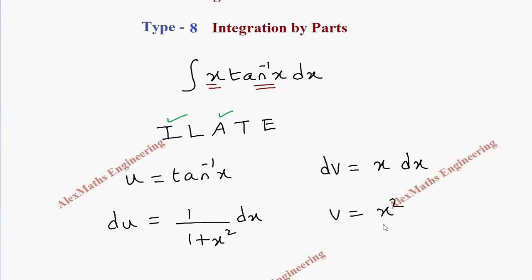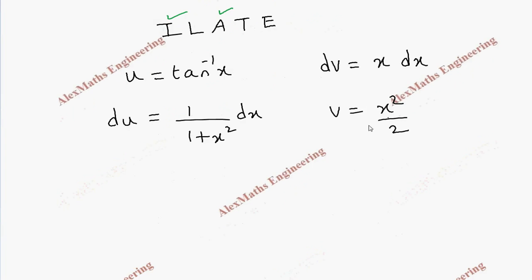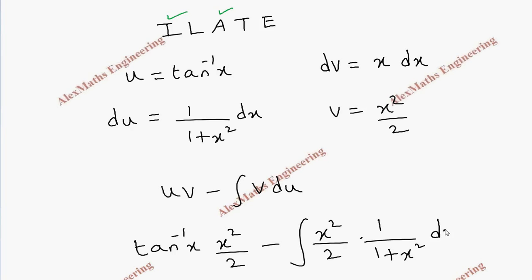Now let's substitute in the formula u v minus integral v du. So u is tan inverse x into v is x square by 2 minus integral v is x square by 2 into du is 1 by 1 plus x square into dx.